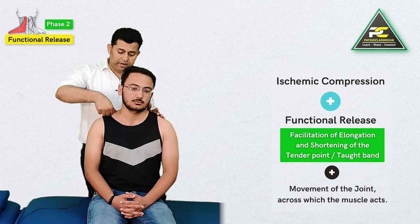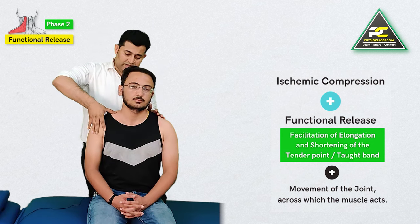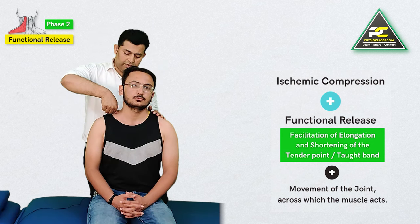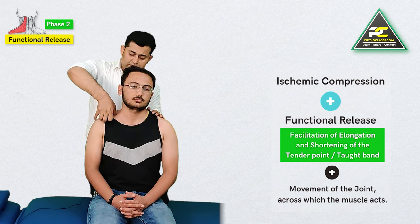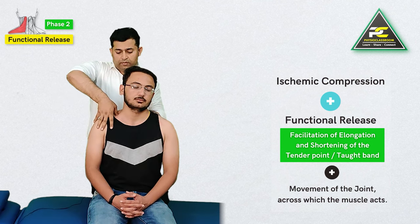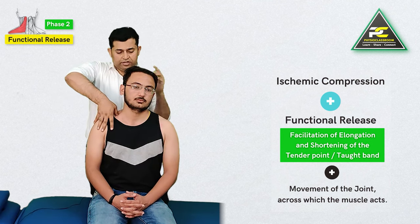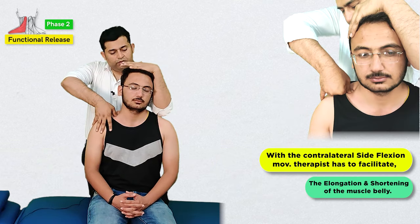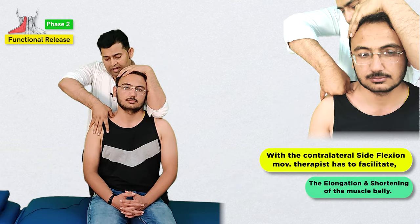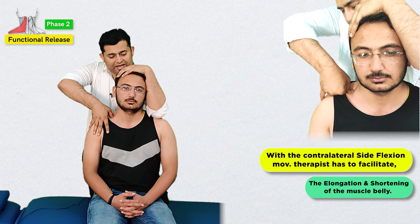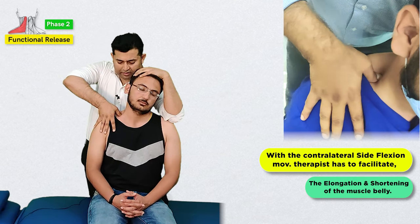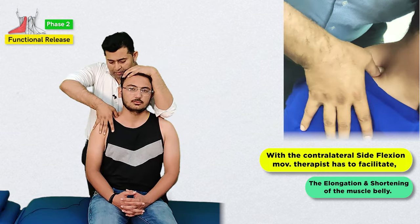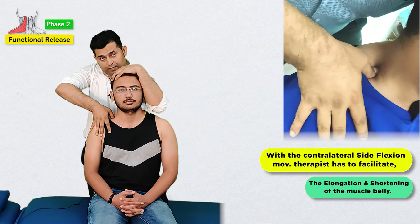The treatment looks like this: after delivering the ischemic compression, the therapist holds that compression while the other hand grabs the patient's head and neck, and then passively takes the head into contralateral lateral flexion and back to the starting position.